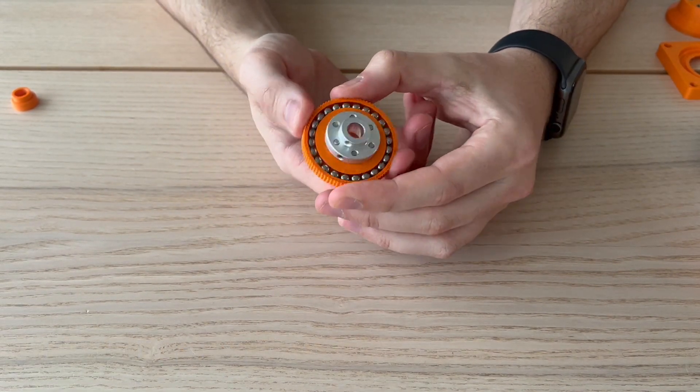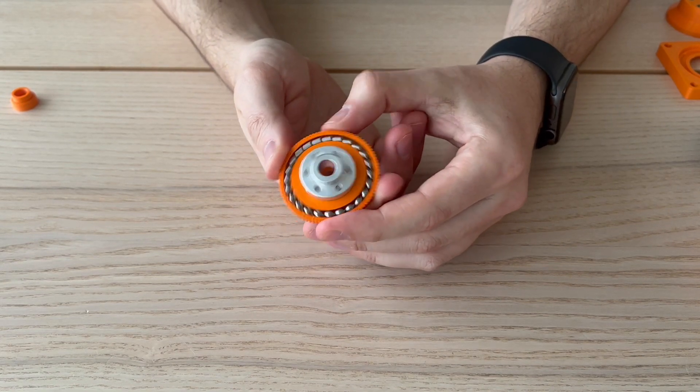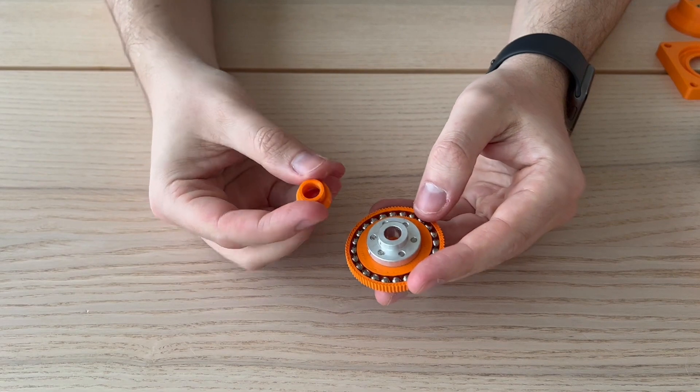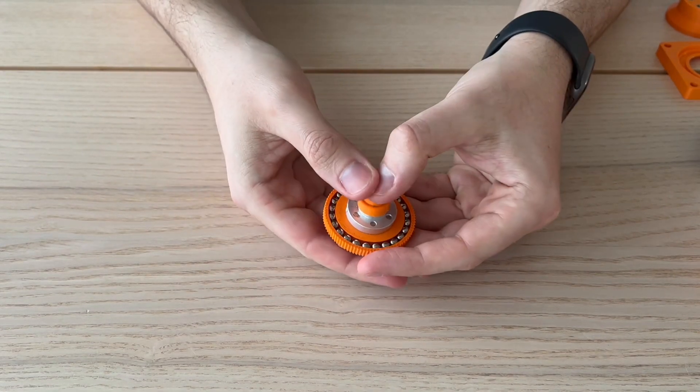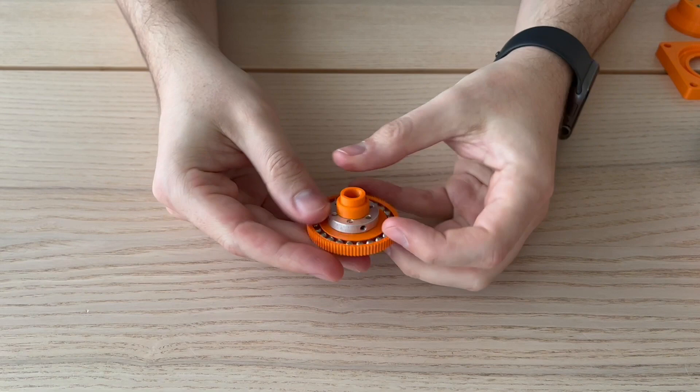Applying some pressure in the flex spline, we can feel the oval movement. Now we will add a plastic adapter to align the center of the flex spline with the bearing.